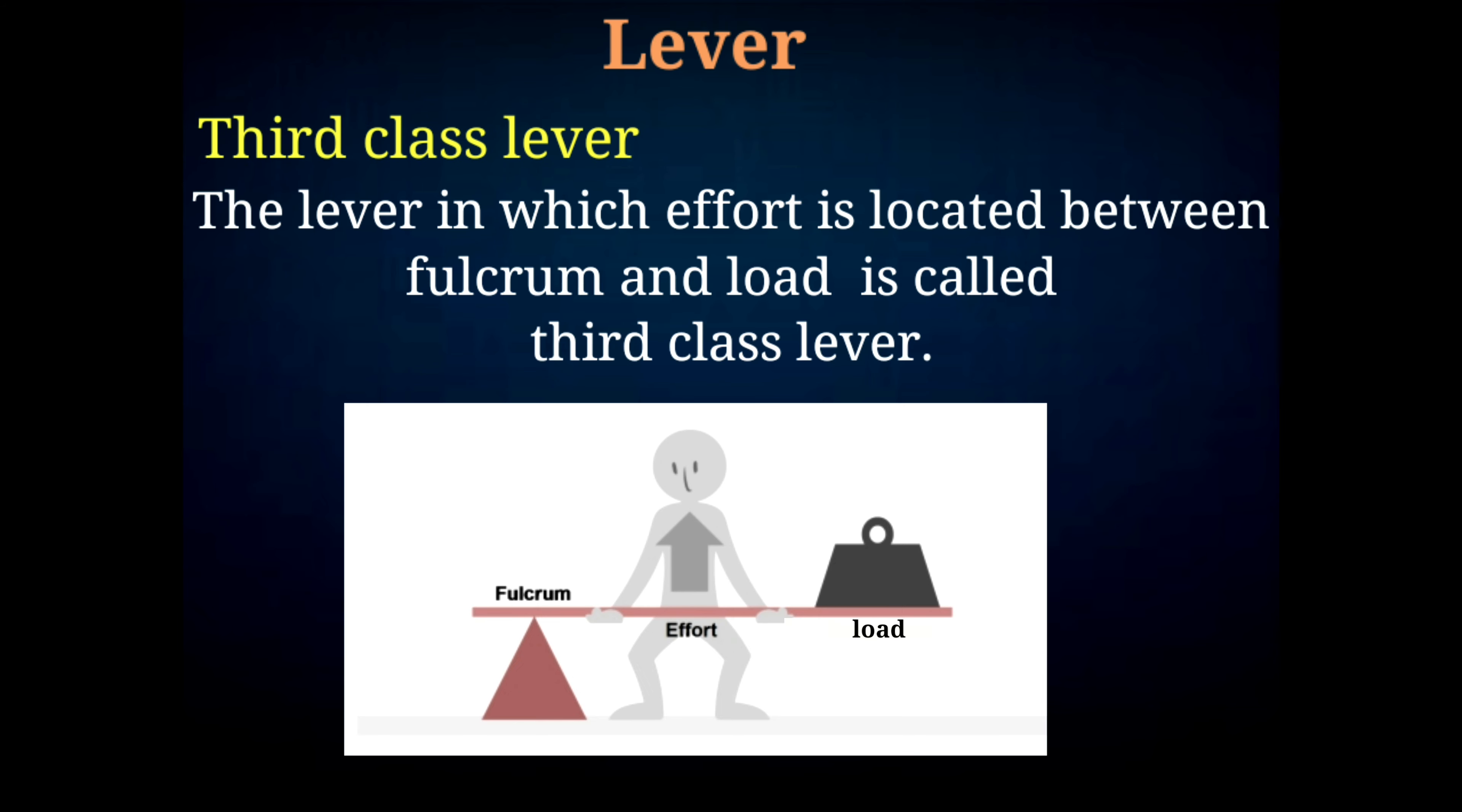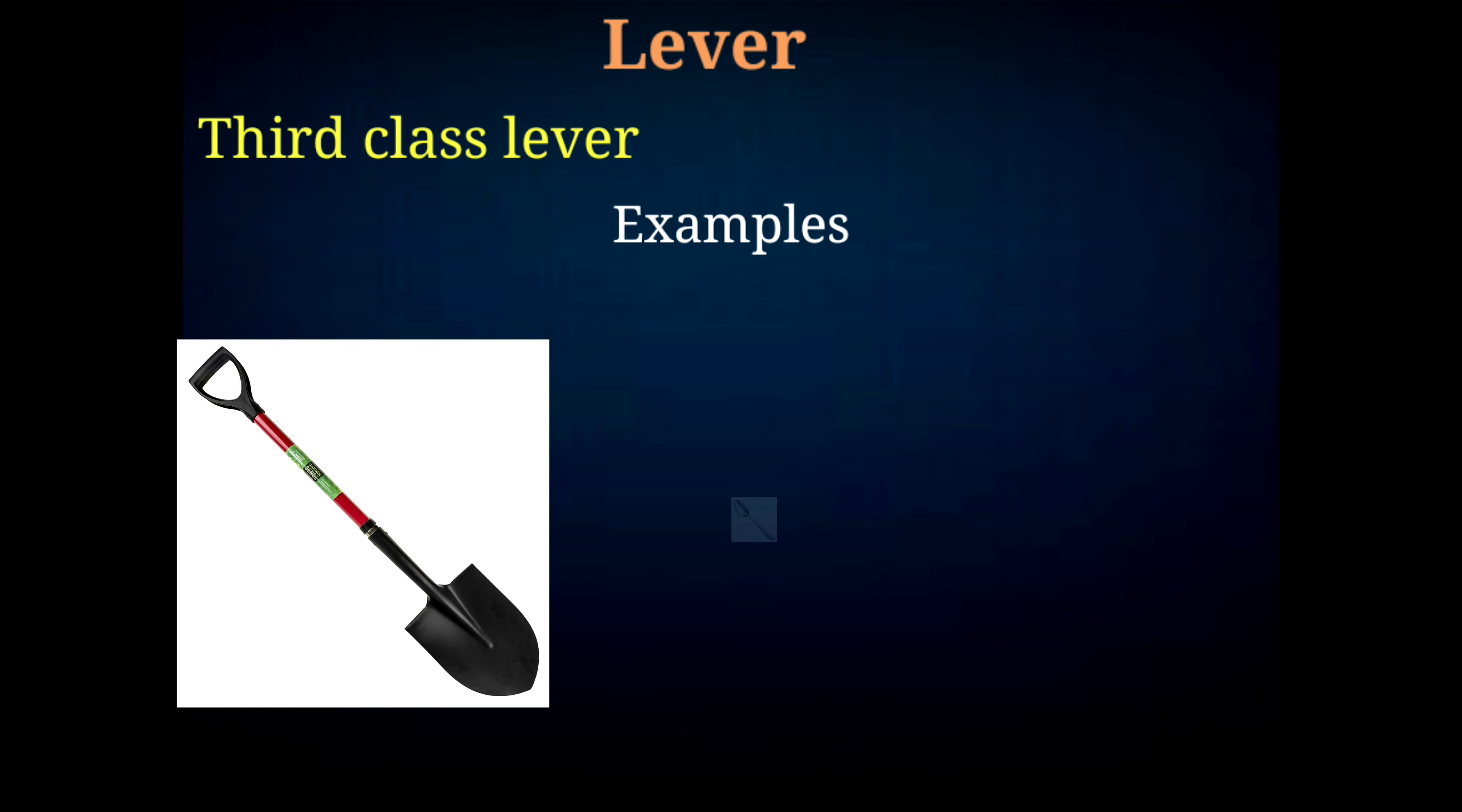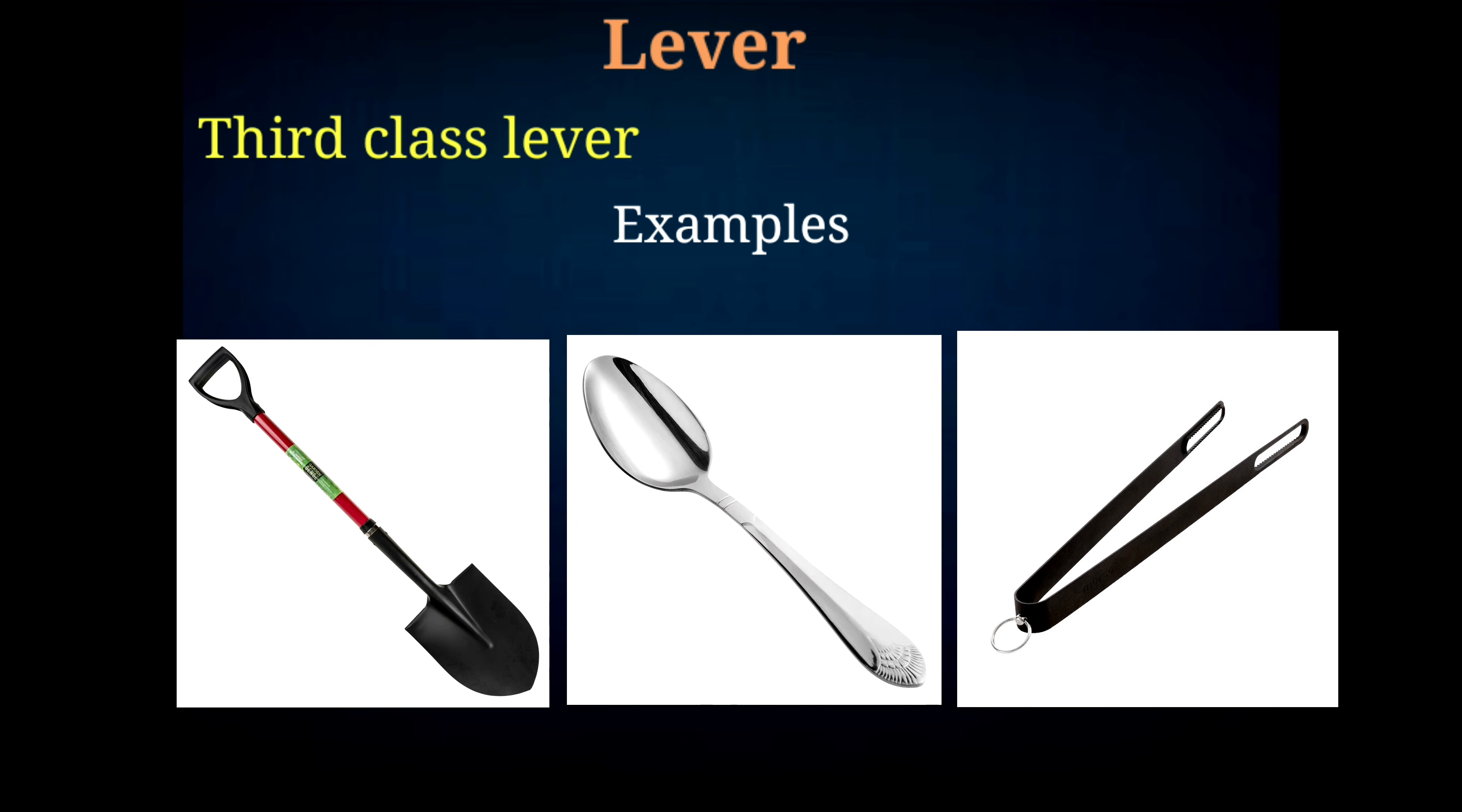Third class lever: The lever in which effort lies between fulcrum and load is called third class lever. Some examples of third class levers are saw, well, spoon, fire tongs, etc.